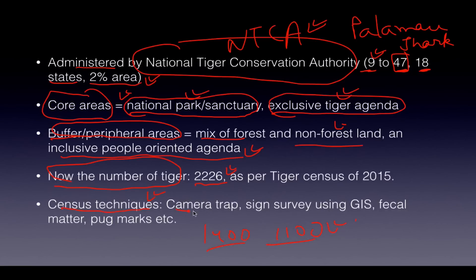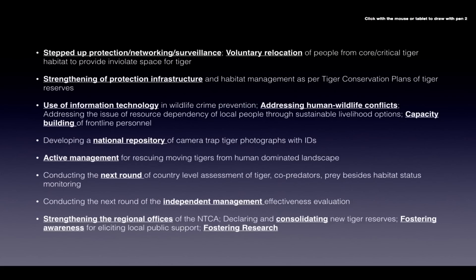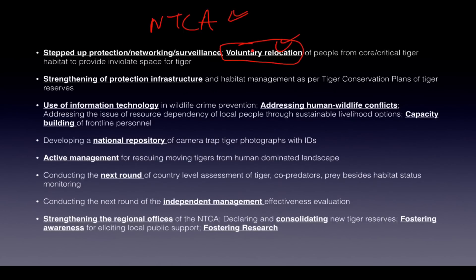Census techniques used for tigers include camera traps, sign surveys using GIS, fecal matter analysis, pug marks, etc. They also map co-predators, do density mapping, and prey mapping. Key mandates of NTCA include voluntary relocation of people from core areas, and these points can be used in almost any answer writing related to government schemes, programs, or acts.